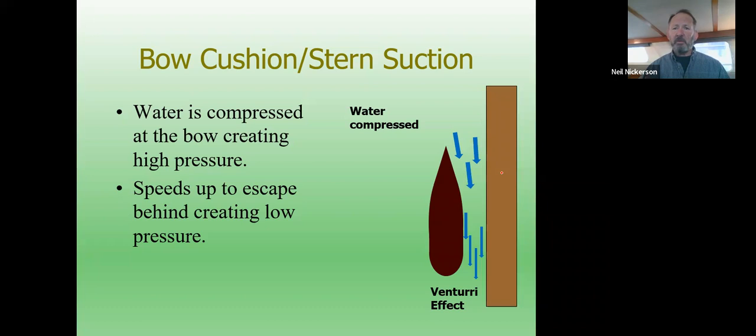We compress the water at the bow, we actually build up the water level, and that building up that pressure, building up that water level, pushes our bow away from the bank. We call that a bow cushion or bank cushion.